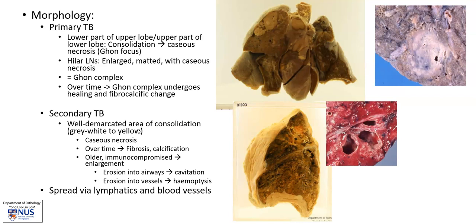In secondary TB, there is usually a well-demarcated area of consolidation, and this may also have areas of yellowish caseous necrosis, and again there may be fibrosis and calcification with time. If the patient is not so well-equipped to neutralize the infection, this area can actually enlarge and spread. It can erode into the airways, giving rise to cavitation, as you see here and here. And this involvement of the airways is what will lead to a cough with productive sputum, and this sputum actually contains infective organisms. They can also erode into the vessels, giving rise to hemoptysis, and there may be spread via lymphatics and blood vessels, causing miliary TB and also causing extra-pulmonary TB. And this is how they can potentially get to the cervical lymph nodes.